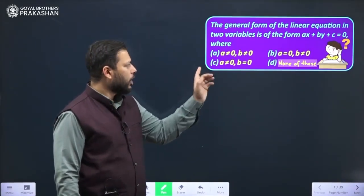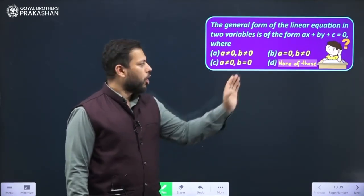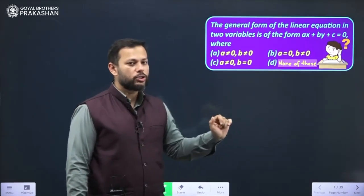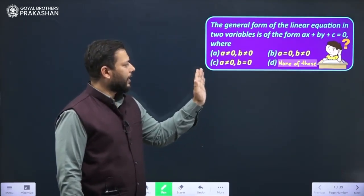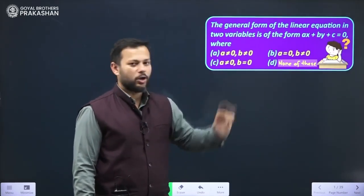Let us read them one by one. Option a: a is not equal to 0, b is not equal to 0. Option b: a is equal to 0 and b is not equal to 0. Option c is a is not equal to 0 but b is equal to 0, and option d: none of these.